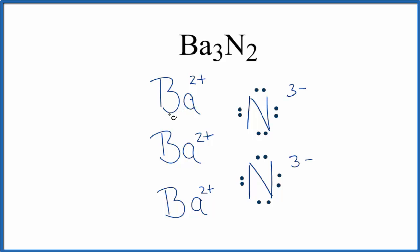To show that the electrons were lost from the metal to the non-metal, that they're not shared like in a covalent bond, let's put brackets around each nitrogen here. You'll often see brackets around the barium atoms as well. So this is the Lewis structure for Ba3N2, barium nitride.